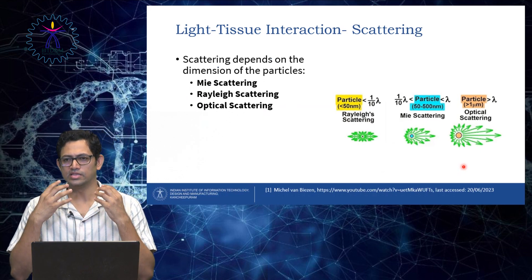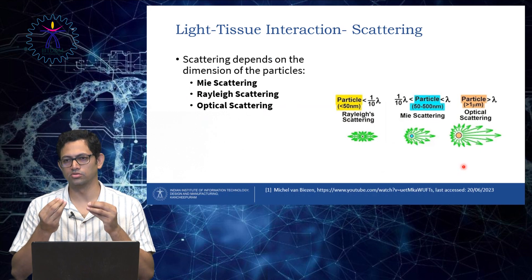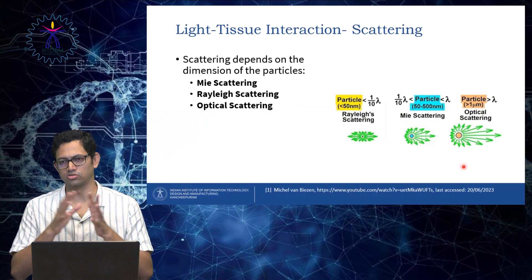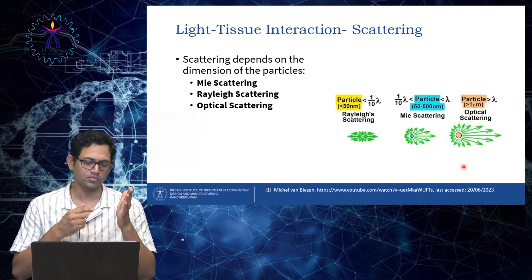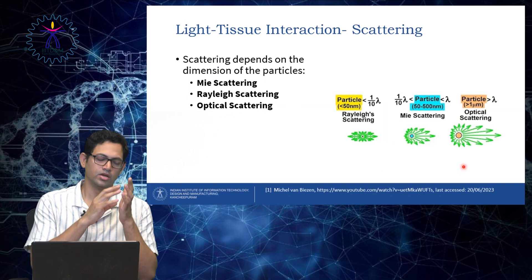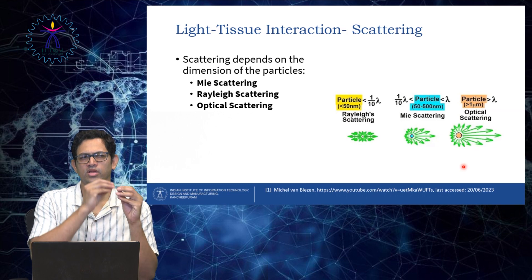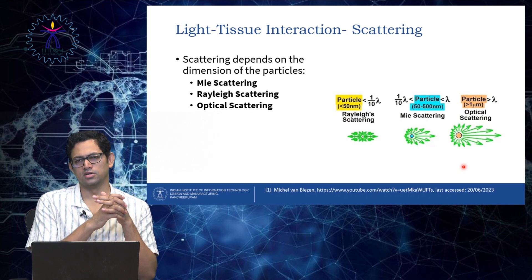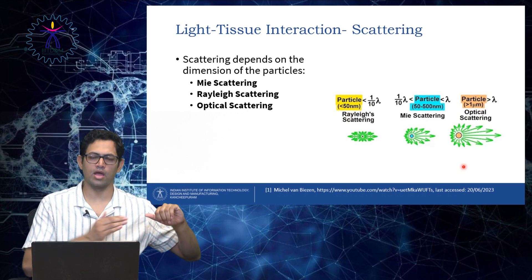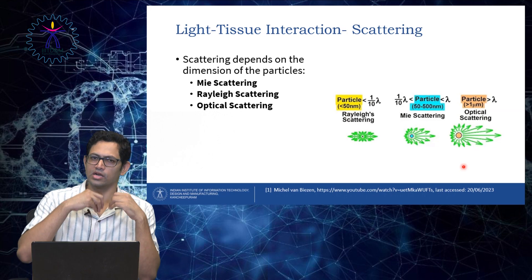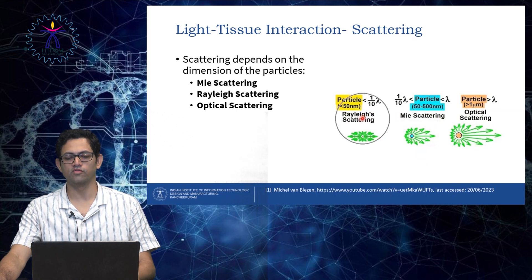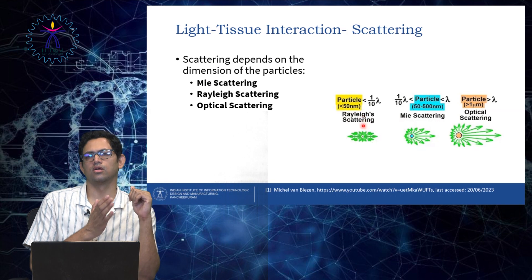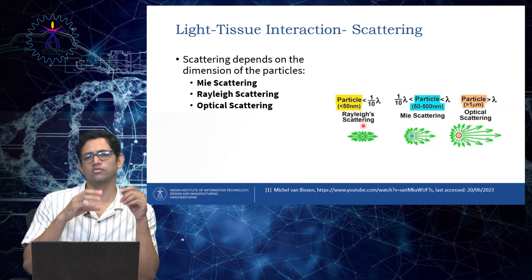That depends upon the dimensions of the tissue constituents. For example, if you are operating at around 530 nanometers — that is a green light source — and your tissue constituents are hypothetically having particles of around 50 nanometers, that is about 10 times smaller in dimension than the operating wavelength, then the scattering that will occur within this tissue constituent would be Rayleigh scattering. If the particle dimension is less than around one-tenth of the operating wavelength, then we will get Rayleigh scattering.